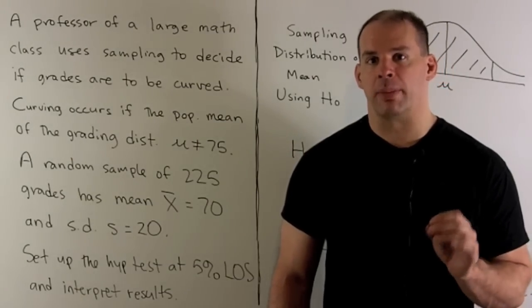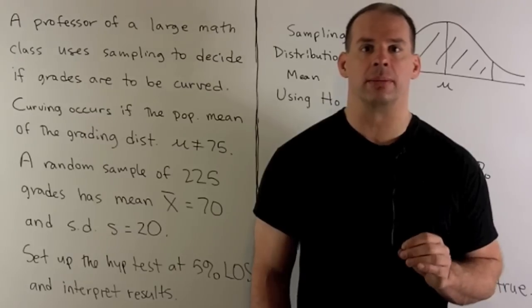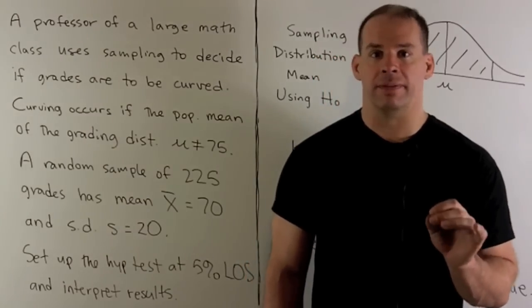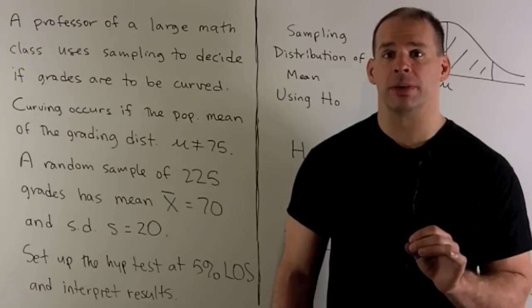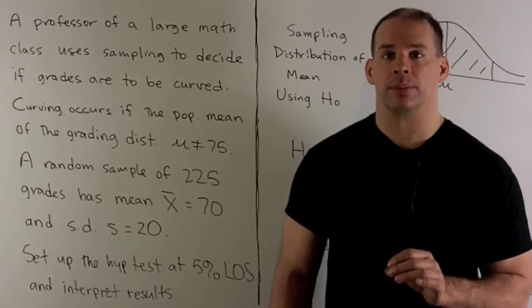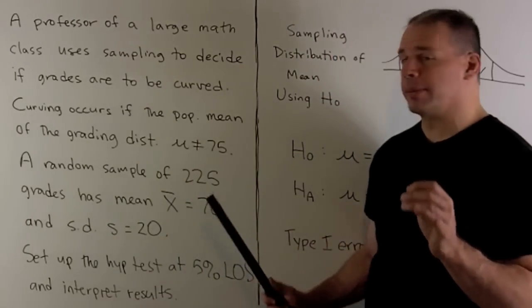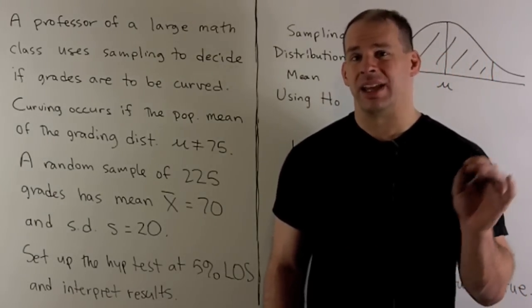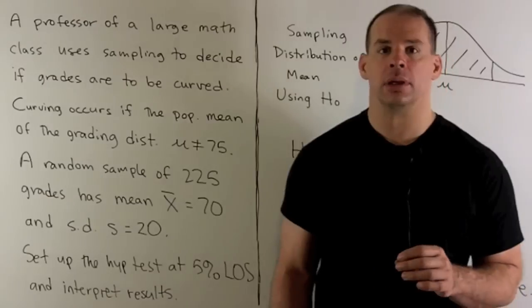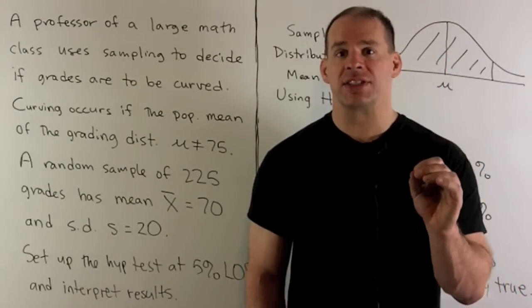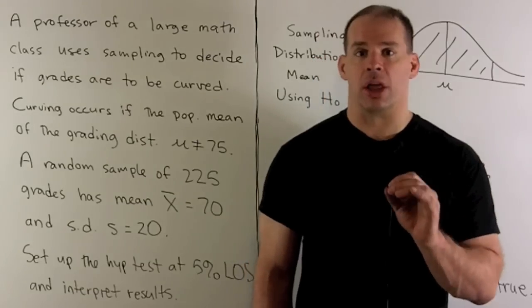A professor of a large math class uses sampling to determine if grades are to be curved. Curving occurs if the population mean of the grading distribution is not equal to 75. A random sample of 225 grades has mean x̄ = 70 and standard deviation s = 20. Set up the hypothesis test at 5% level of significance and interpret results.